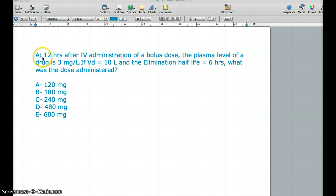Going to the next question. At 12 hours after IV administration of a bolus dose, the plasma level of a drug is 3 milligram per liter. If the volume distribution is 10 liter and the elimination half-life is 6 hours, what is the dose administered?